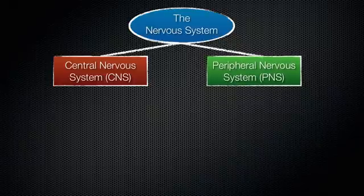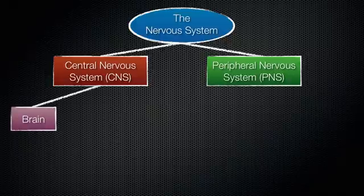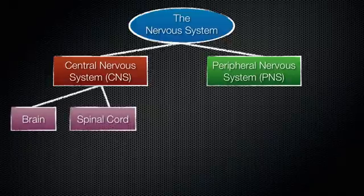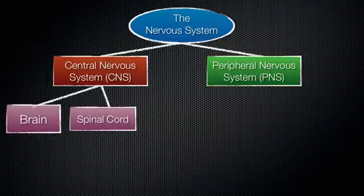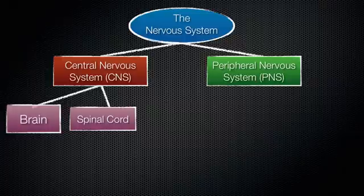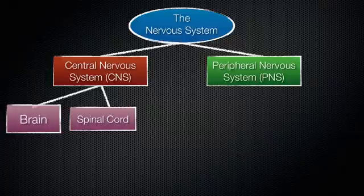Now let's take the central nervous system and divide that. That can be divided into the brain and the spinal cord. The brain is the center of the nervous system — this is where most of the processing is happening. This is the part found within the skull, and this is where things like thought and emotion, coordinating the body's activities, all of that stuff happens.